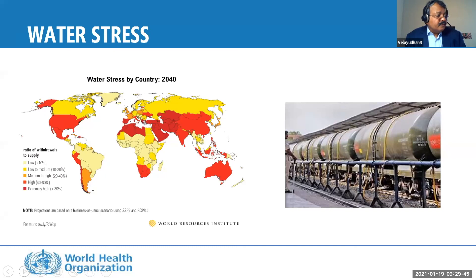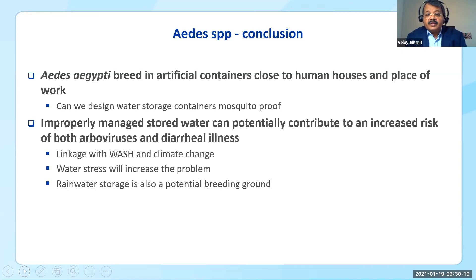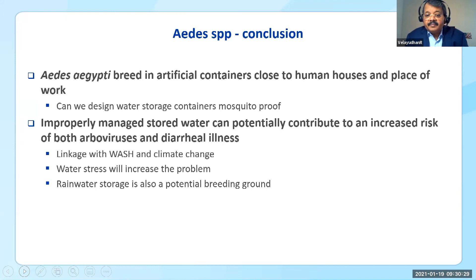In conclusion, Aedes aegypti breeds in all artificial containers close to human habitation. We are working to influence overhead tank manufacturers to make containers mosquito-proof. Improper management of stored water contributes to the risk of both arbovirus and diarrheal diseases, linking to WASH and climate change. Rainwater storage on islands is also a potential breeding ground. These are the unique features of Aedes — thank you very much.